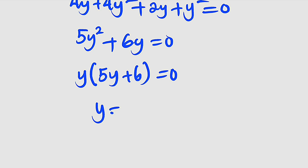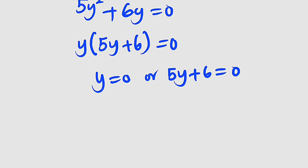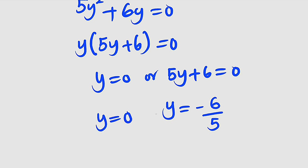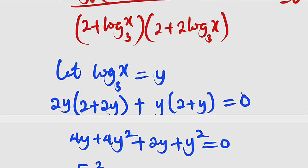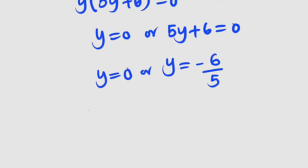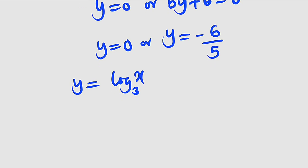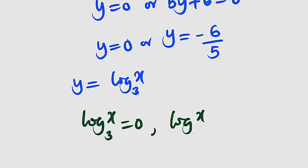Factoring: y(5y + 6) = 0. This implies either y = 0, or 5y + 6 = 0, giving y = −6/5. So we have two values of y: 0 and −6/5. Recalling that y = log₃x, we now back-substitute.